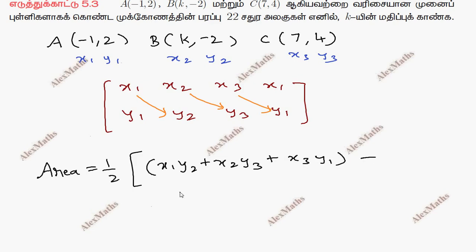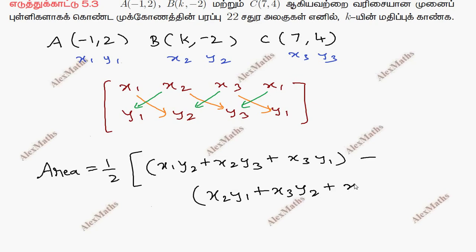Minus the other diagonal products: x2·y1 plus x3·y2 plus x1·y3, bracket close.